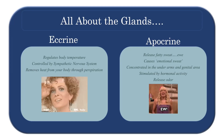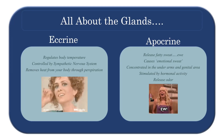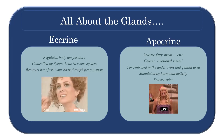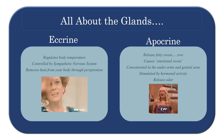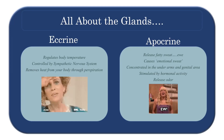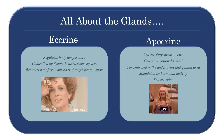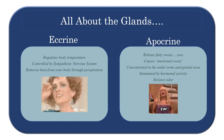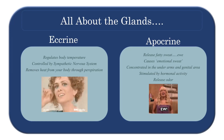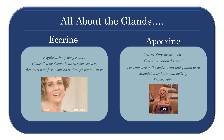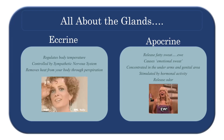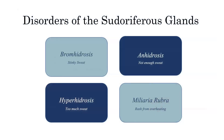The apocrine gland actually releases a fatty sweat. This is what causes emotional sweat — it's concentrated in our underarms and genital area, and it's stimulated by hormonal activity, such as being nervous or aroused. This unfortunately does release an odor. Welcome to skincare.